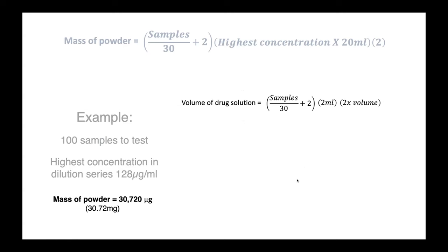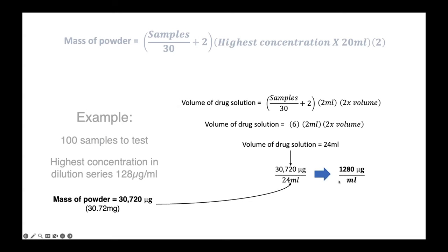Next we need to calculate the volume of drug solution that's required. So taking this similar equation, we can see that we have six sets of samples times two milliliters per sample and then we double the volume. So it's a total of 24 milliliters that we need to dissolve this antimicrobial powder in. And when we do that, you can see that we get a final concentration of 1,280 micrograms per milliliter. This is 10 times higher than our desired concentration in the dilution series of 128 micrograms per mil. I'll explain exactly why this is in our next slide.